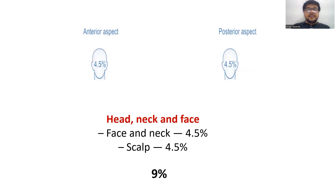Let us check out the percentages. Anterior and posterior aspects of the head, neck, and face: in the face and neck it is 4.5%, and in the scalp it is 4.5%. So the total is 9%, as you can find out in the image.